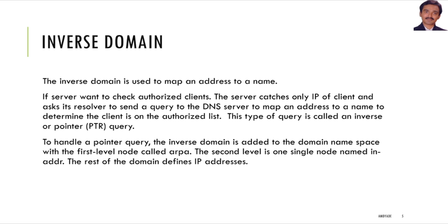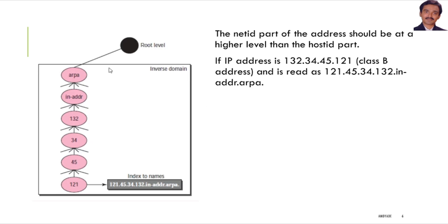To handle an inverse query, the inverse domain is added to the domain name space with a first level node called arpa and a second level node named in-address. The rest of the domain defines the IP address. For example, if the IP address is 132.34.45.121, it is a class B address — the net ID part is stored at the higher level and the host ID part at the lower level, and is read as 121.45.34.132.in-address.arpa.